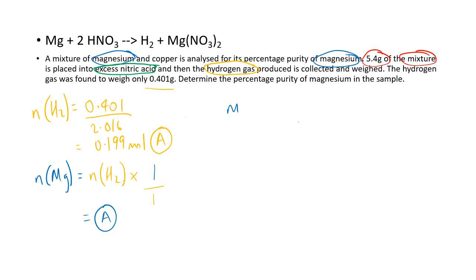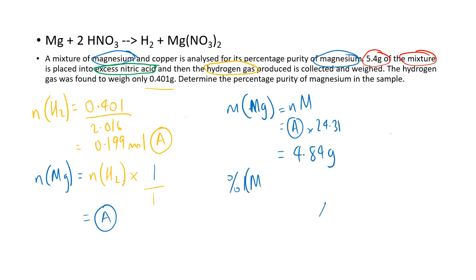Since that's A, the mass of magnesium = n × M = A × 24.31 = 4.84 grams. The percentage of magnesium within the mixture = 4.84 ÷ 5.4 × 100 = 89.5%. Remember, you cannot use that initial mass of mixture at the start — even if they call it impure magnesium — you still can't use that value until the very end. Start with the product and work backwards.